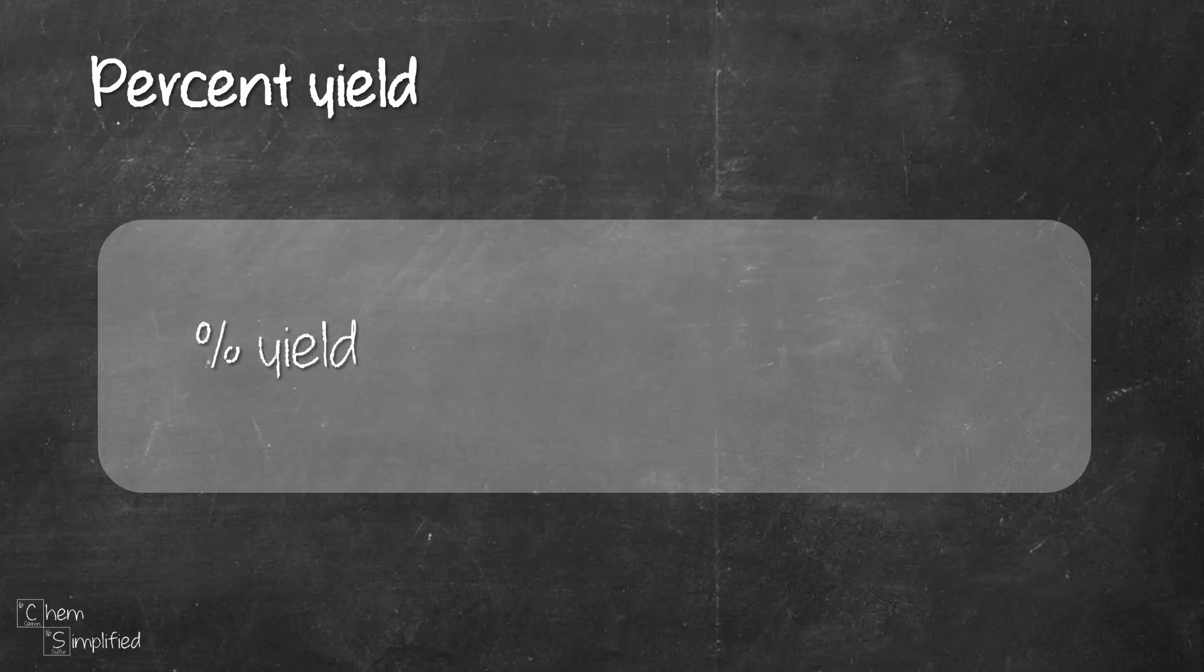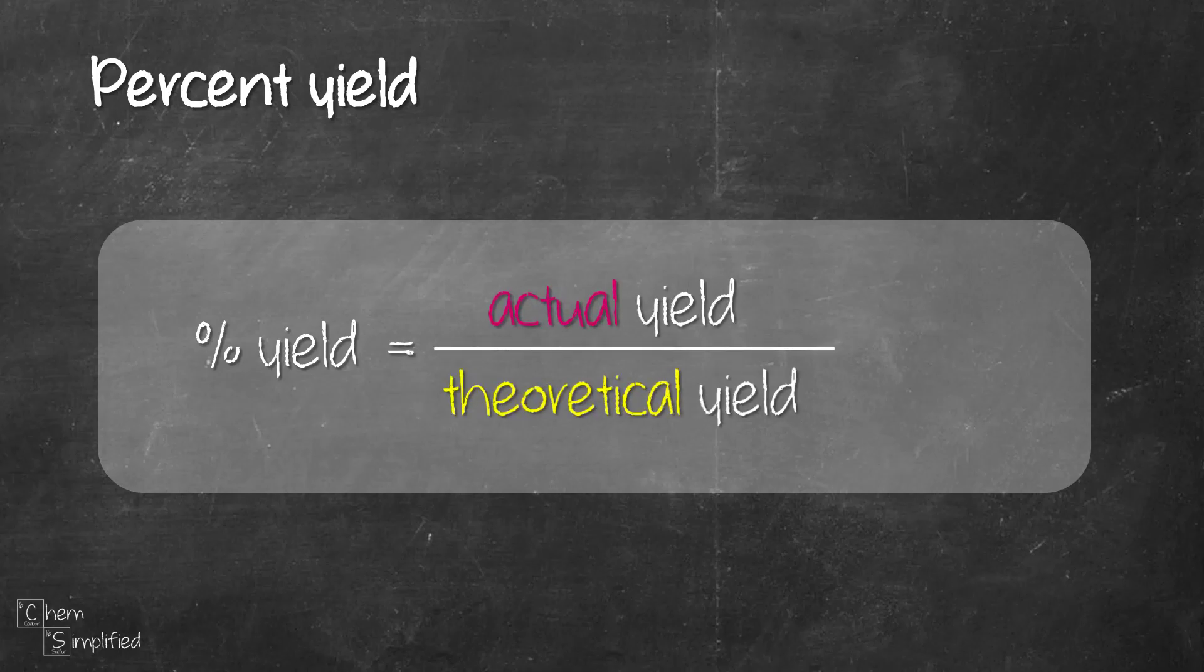Percent yield tells us how much product is obtained compared to the maximum possible mass. We can calculate it using actual yield divided by theoretical yield, then multiply by 100%.